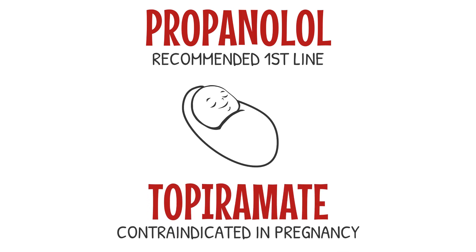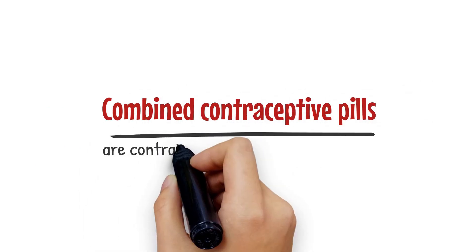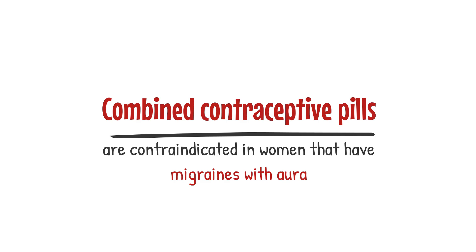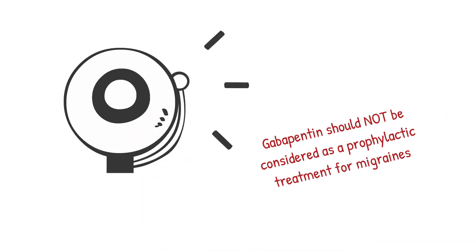If the patient is pregnant or planning a pregnancy, topiramate should be avoided. Effective contraception should be used in women of childbearing potential due to the risk of fetal harm. There is an increased risk of stroke in migraine sufferers that use the combined contraceptive pill. Combined contraceptive pills are contraindicated in women that have migraines with aura. However, those that experience migraines without an aura can usually use the combined contraceptive pill if they have no other stroke risk factors like high blood pressure. Gabapentin should not be considered as a prophylactic treatment for migraines.